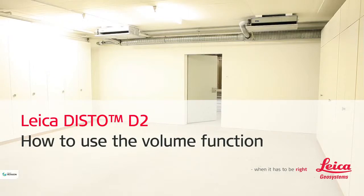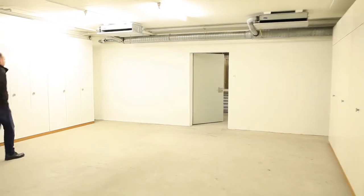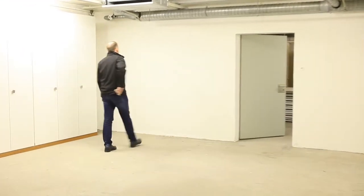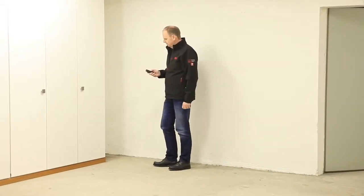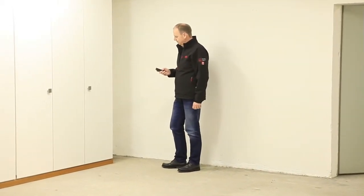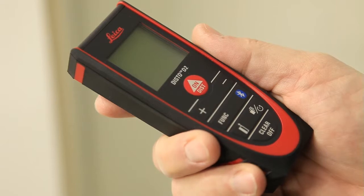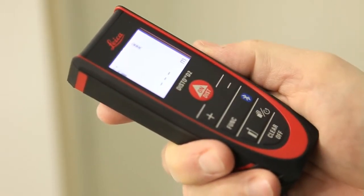Leica Disto D2 — how to use the volume function. We have here a very simple rectangular room and want to measure the volume with the help of the new Disto D2. First, switch on the Disto with the ON DIST button.